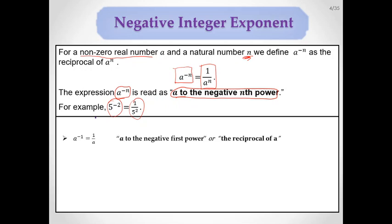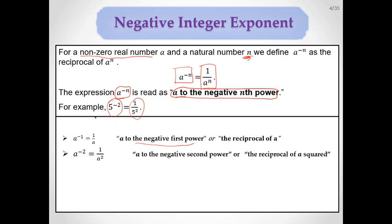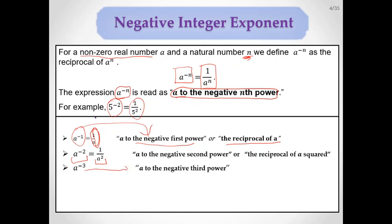Let's concentrate on reading these: A to the negative first power, or the reciprocal of A. A to the negative second power equals the reciprocal of A squared. A to the negative third power. And in general, A to the negative nth power.